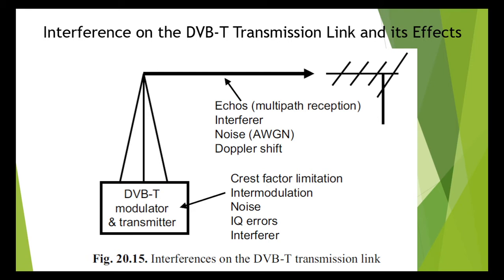The finite quality of signal processing in the DVB-T modulator also results in the creation of noise-like interferors. Further noise occurs on the transmission link depending on the conditions of reception. Similarly, multiple echoes and sinusoidal or impulse-like interferors can be expected, and echoes in turn can lead to frequency and location selective fading.